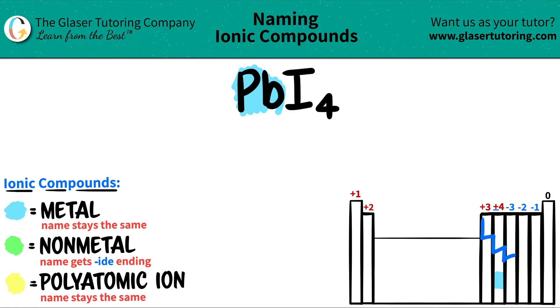Now, remember, there's going to be a staircase. Anything to the right of the staircase minus hydrogen are metals. Hydrogen is the only one left of the staircase that's a non-metal.